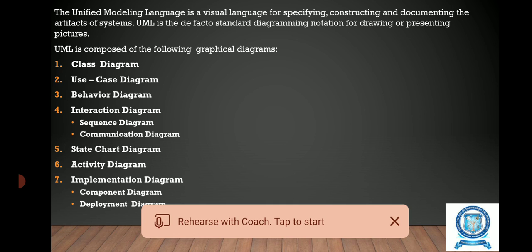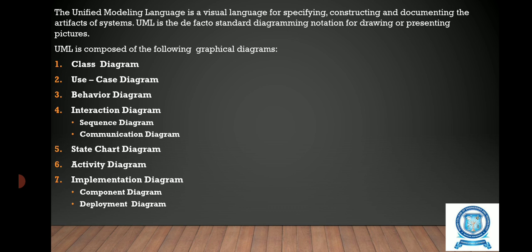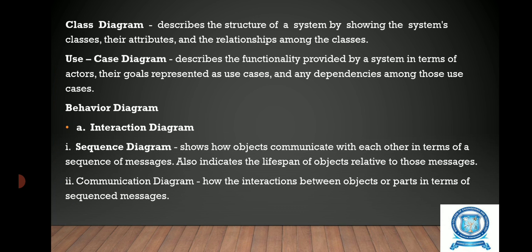UML is composed of the following graphical diagrams: class diagram, use case diagram, behavior diagram, interaction diagram — which is further split into sequence diagram and communication diagram — state chart diagram, activity diagram, and implementation diagram — which is split into component diagram and deployment diagram.